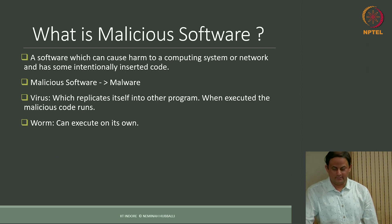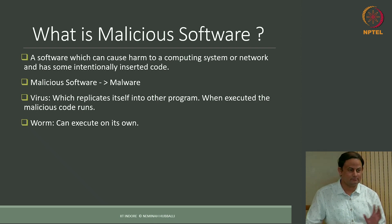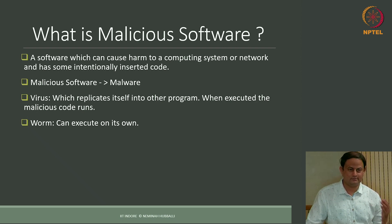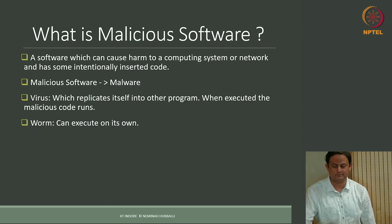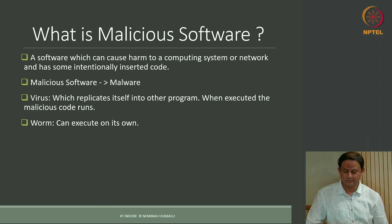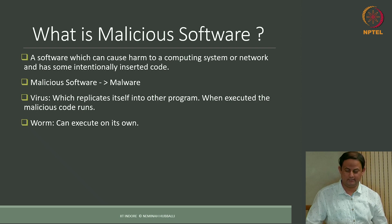The second category of malicious software is called a worm. Unlike a virus, a worm can run on its own — it is an independent program that can do damage on its own. The virus requires some other program to run it, but the worm, once the code is written and released, can go and run on the computer as an application by itself.